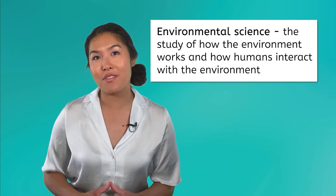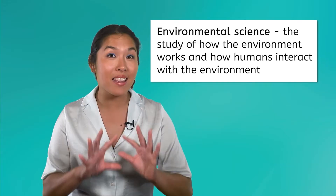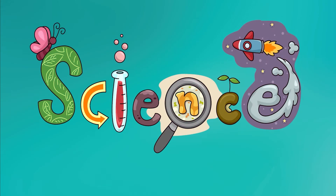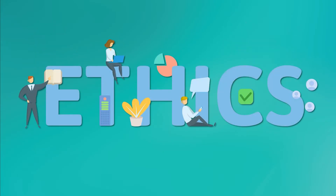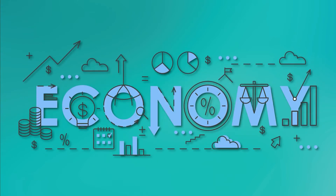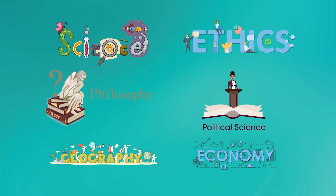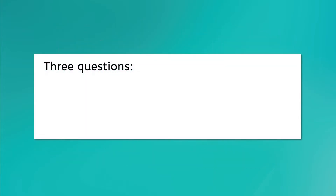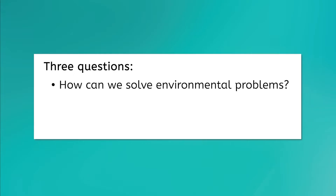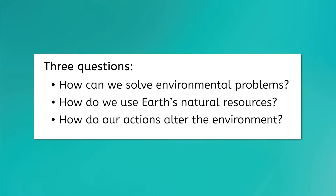It is important to identify the thematic definition we are going to use in this course so you can look at our topics through that lens as we move through our lessons. Environmental science is a truly interdisciplinary subject. It has the scientific topics of the natural sciences like biology, the ethics and philosophy topics of the humanities, and the political science, geography, and economic topics of the social sciences. While these represent a wide range of subjects, everyone who studies environmental science does so with three questions in mind: How can we solve environmental problems? How do we use Earth's natural resources? And how do our actions alter the environment?